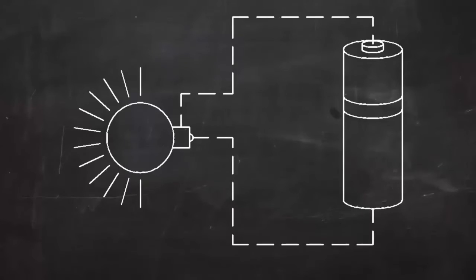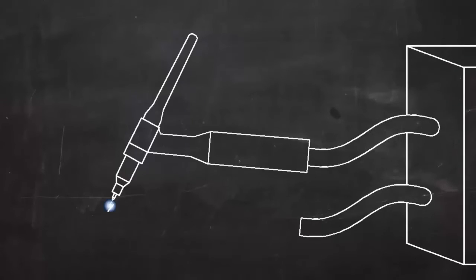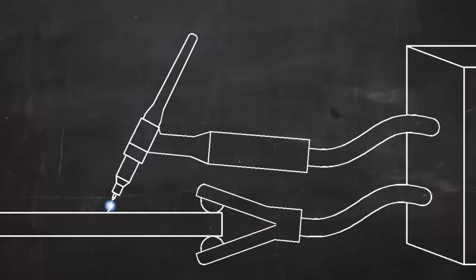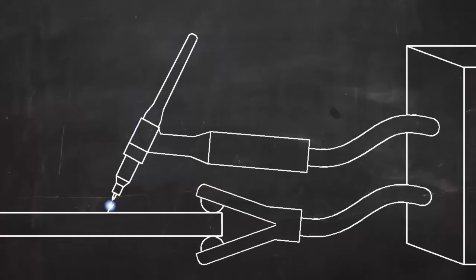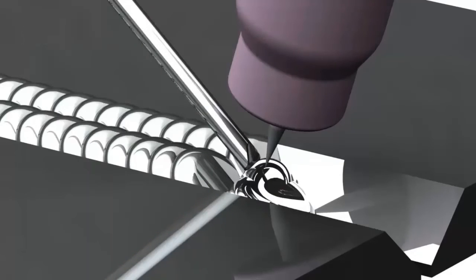In an electric circuit, the current flows in a loop. In TIG welding, the current has to flow in a complete circle from the machine, to the torch, into the work, and back to the machine. A work lead is clamped to the work to complete the circuit. You can TIG weld with or without filler metal. If you want to add filler metal, use a filler rod — a rod of metal with a specific alloy — making sure it is compatible with the base metal and has the required strength.